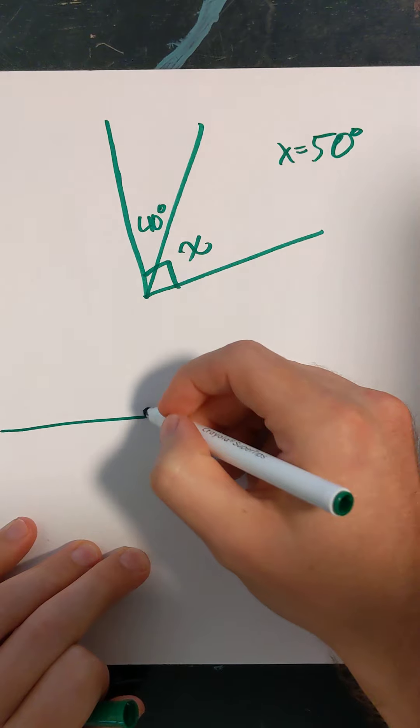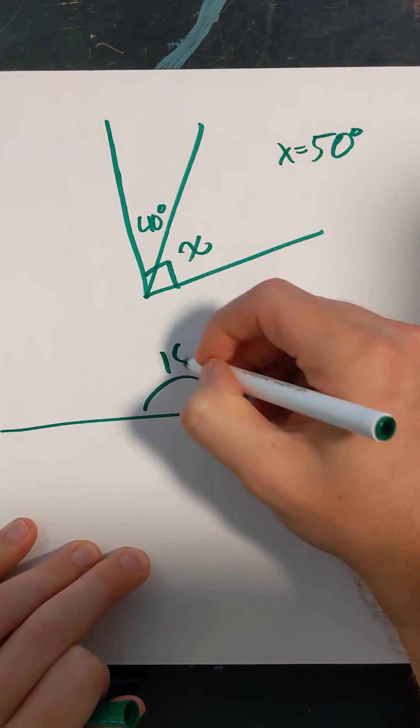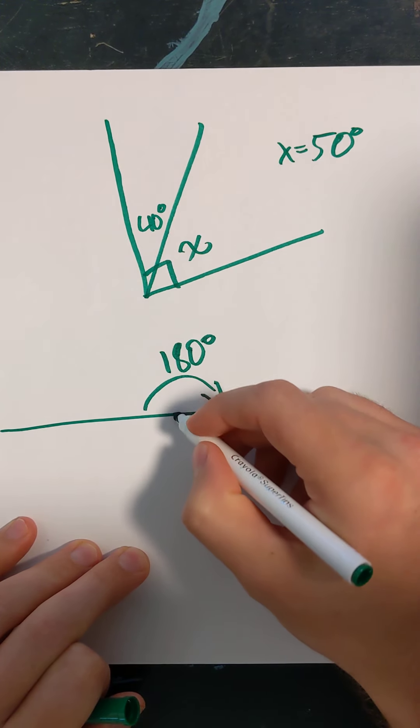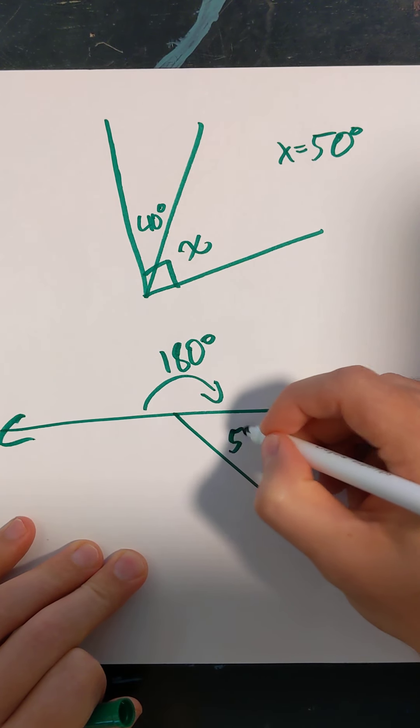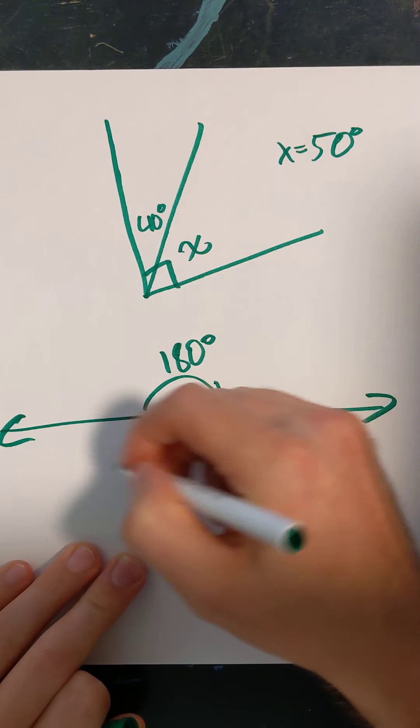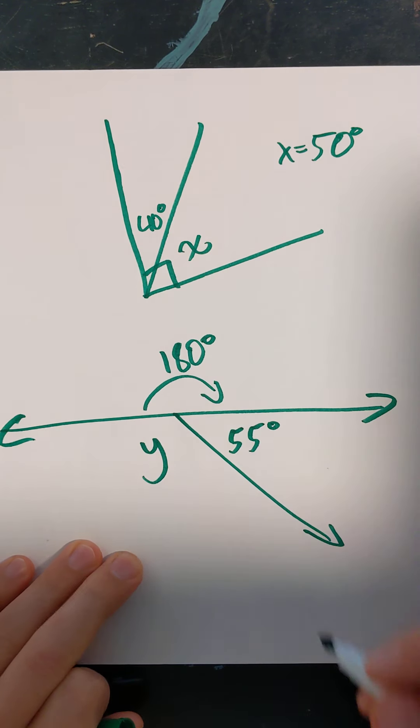Let's say we have a straight line. I know a straight line is 180 degrees. So if I split that straight line and I say this part looks to be about 55 degrees, what must this part—we'll call it Y—be?